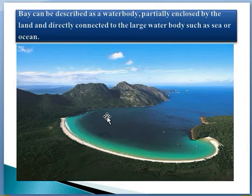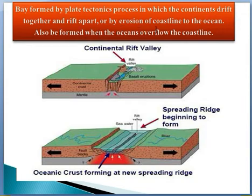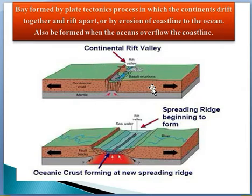A bay is formed by plate tectonics processes in which the continents drift together and rift apart, or by erosion of a coastline into the ocean, or also when the ocean overflows the coastlines. Here you can see the continental rift valley where two plates are moving apart.